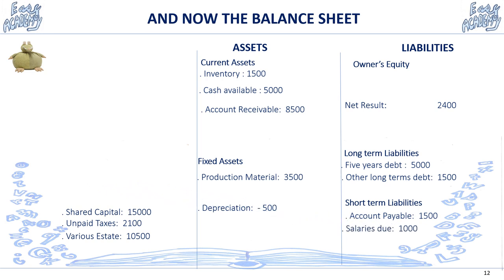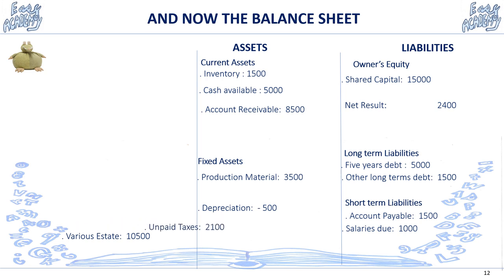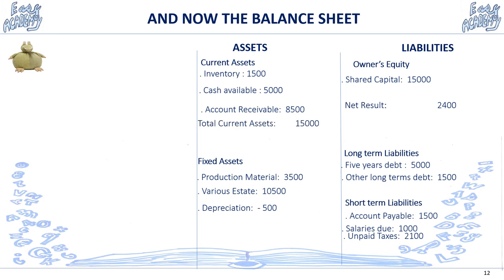Salaries due are short-term debts. Share capital is the initial investment from shareholders — their ownership of the company. Unpaid taxes are also a short-term liability, representing what you owe the government. Various estate is of course a fixed asset. Let's calculate: total current assets is 15,000. Fixed assets: 3,500 plus 10,500 minus depreciation totaling 13,500. Therefore total assets are 13,500 plus 15,000.